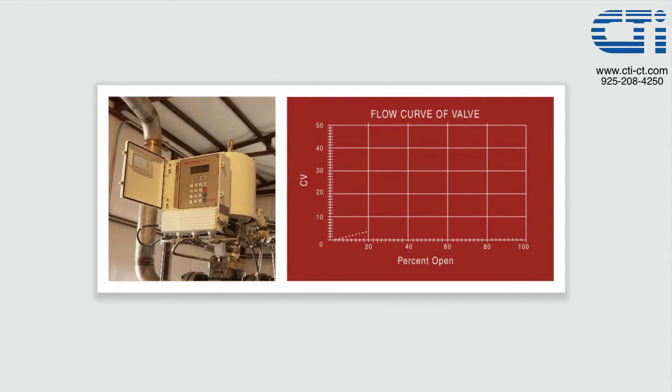The StarPak accurately measures the flow over the entire range of the valve. When each StarPak is built, its flow rate is measured through the valve from fully closed to fully open. This flow curve is then loaded into the onboard computer so that StarPak accurately knows the flow rate at any opening.